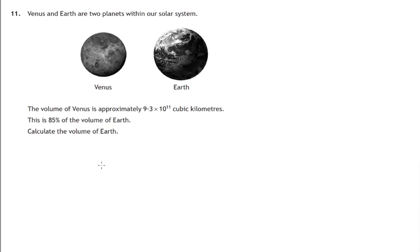So let's do this in a proportion diagram where we know that 85% of the volume of the earth corresponds to 9.3 times 10 to the power 11 cubic kilometres. So what would that make 1% equivalent to?